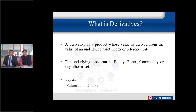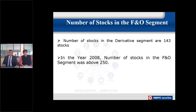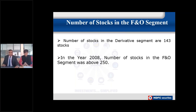There are basically two types of derivatives famous in India: futures and options. The number of stocks available in the derivative segment right now is 143. In 2008 it used to be 250, but illiquid stocks have been removed. While about 2,500 stocks are traded on the Bombay Stock Exchange and 1,000 to 1,500 on NSE, derivatives are available only in 143 stocks.